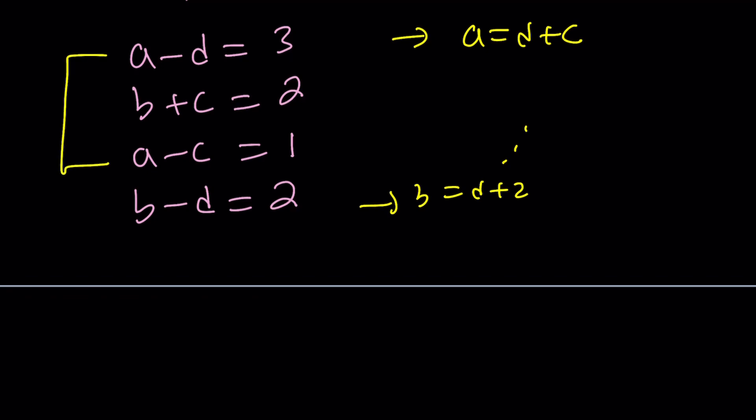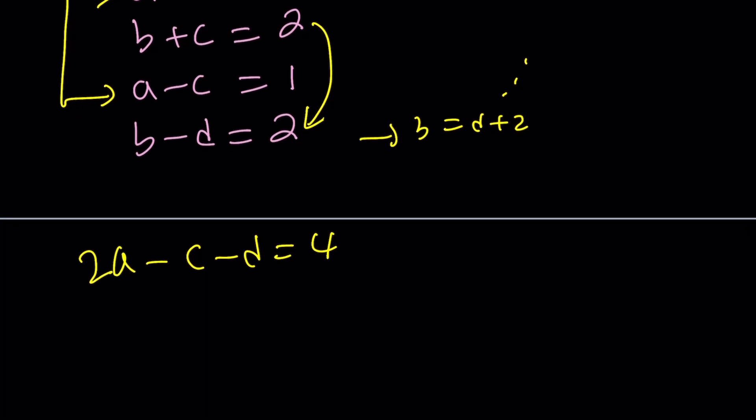So, let's go ahead and add these up. a times 2 minus c minus d is equal to 4. And then I'm going to subtract these to get c plus d. So, b is going to cancel out. In other words, I'm trying to do this, but that's going to give me zero.